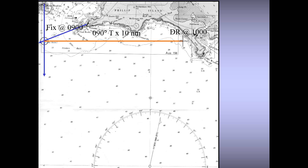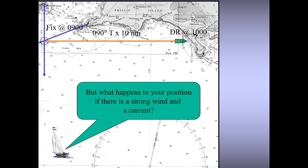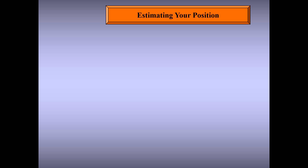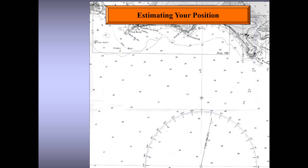However, this is hardly the case — such situations are very rare, because when a vessel is at sea it will definitely have some effect of tidal currents or wind or leeway on its course. In the next couple of slides we'll be answering four questions: what happens to our position when there is a strong wind or current, how do we estimate where our ship will be, and how do we find the course we expect to make good.